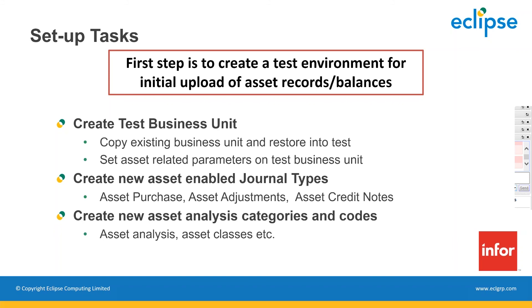The next part involves getting all of the core asset records set up. Using the Q&A Vision Excel template — a standard template for this — we would upload all of the asset record static data including asset code, class, depreciation method, start and end dates, and any related asset analysis categories. We basically upload all of the static data records, the asset records themselves.